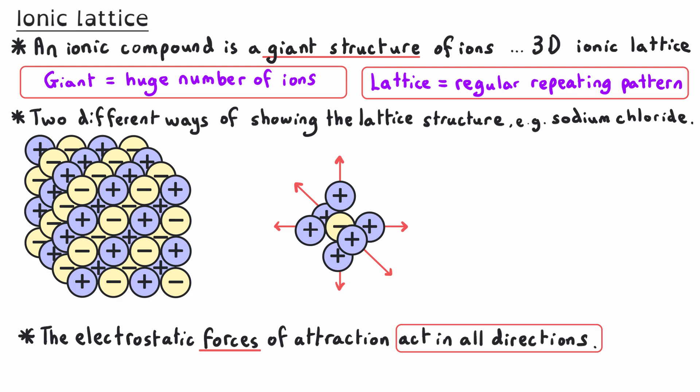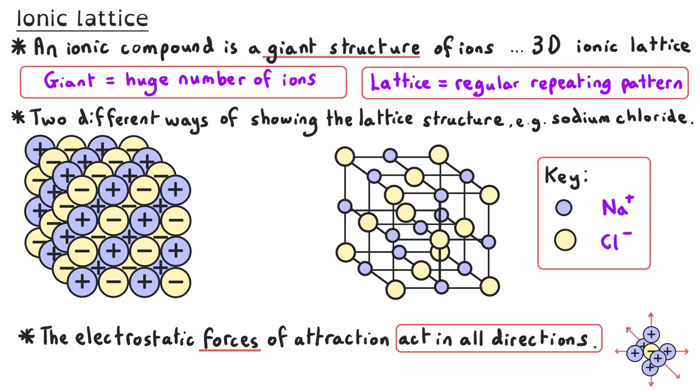These forces are acting in all directions, and the arrangement of ions continues in all directions as well — I'm just showing a small sample of a three-dimensional lattice. Sodium chloride, which is the only lattice you need to be able to identify and recognize, would have billions and billions of ions in it. Another way to show the lattice structure is to have a cube marked out by lines, with each of the oppositely charged ions at the points where the lines meet.